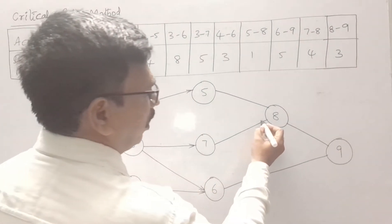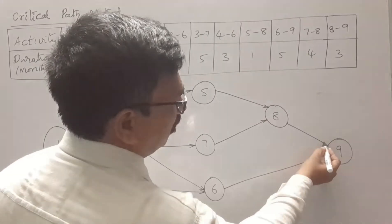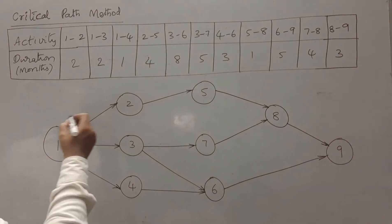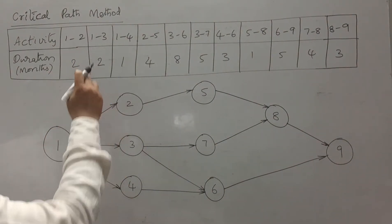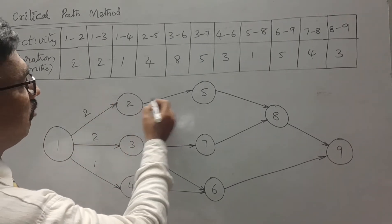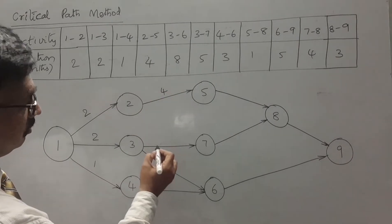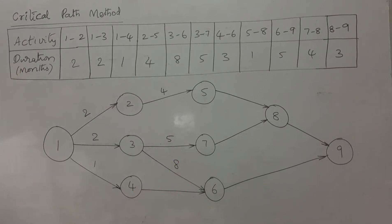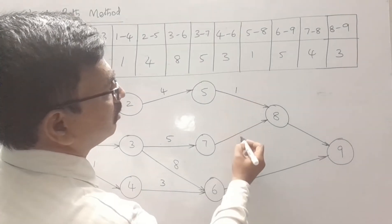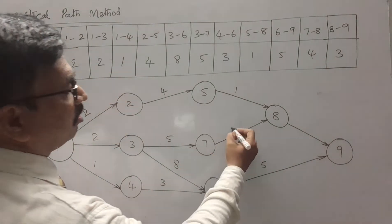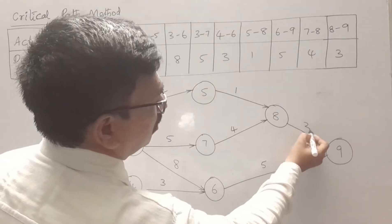We have to mention the activity durations on these arrows. Activity 1-2 is 2 months, 1-3 is 2 months, 1-4 is 1 month. Activity 2-5 is 4 months, 3-7 is 5 months, 3-6 is 8 months, 4-6 is 3 months. Then 5-8 is 1 month, 6-9 is 5 months, 7-8 is 4 months, and 8-9 is 3 months.